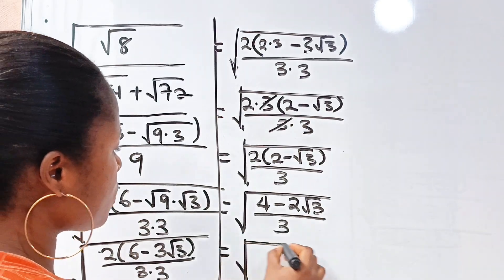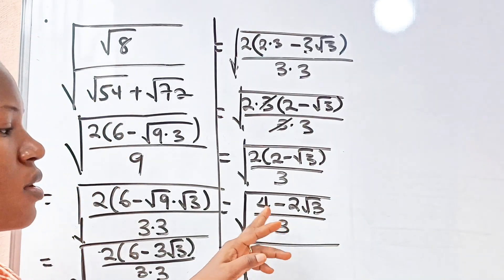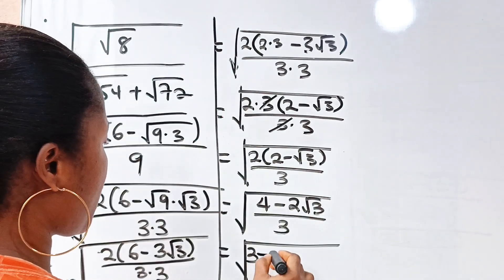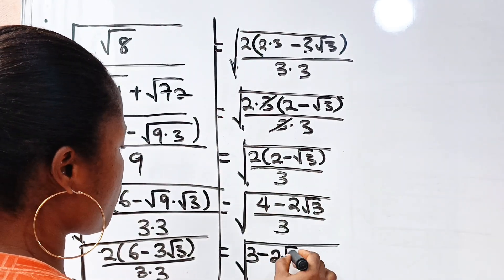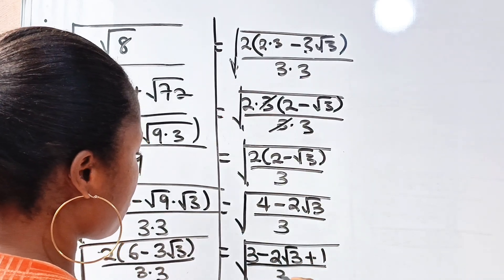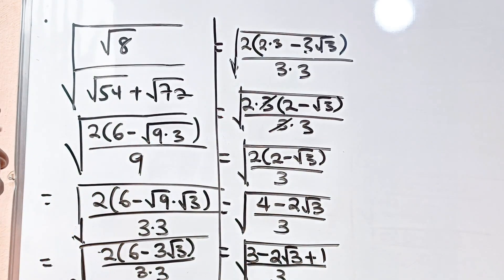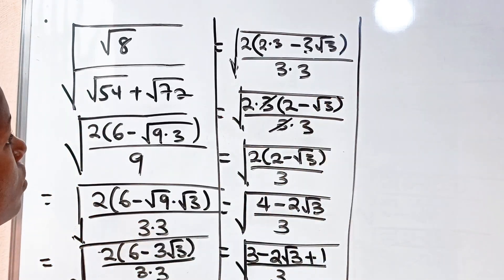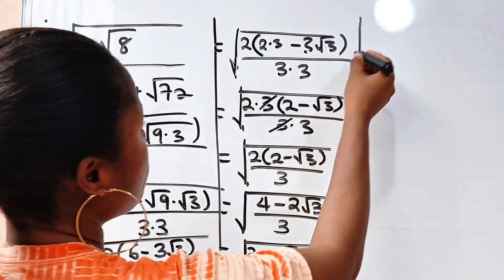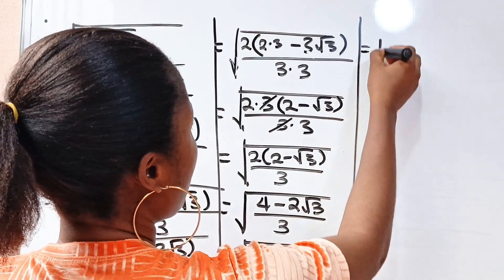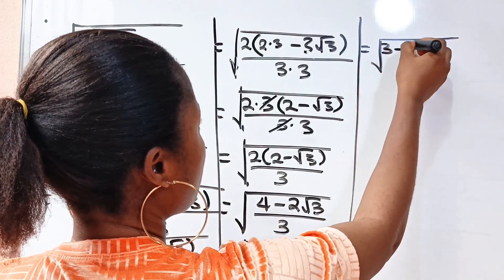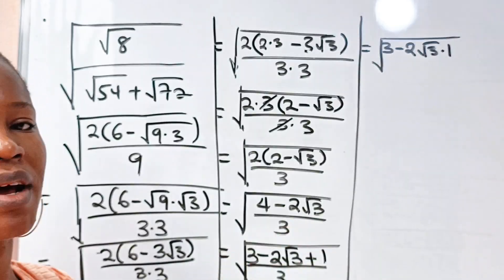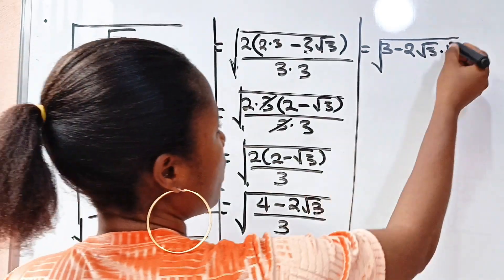Now let's open the bracket. If we do that we have square root of 2 times 2 is 4, minus 2 times root 3 is 2 root 3, divided by 3. So this is equal to — now 4 is the same thing as 3 plus 1 — so we can write it as 3 minus 2 root 3 plus 1, divided by 3. We have not changed anything. So this is equal to the square root of 3 minus 2 root 3 multiplied by 1.